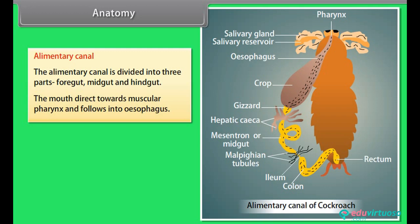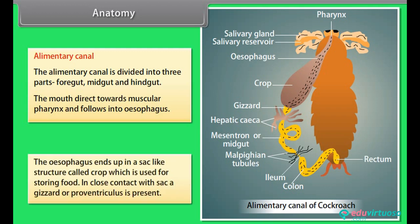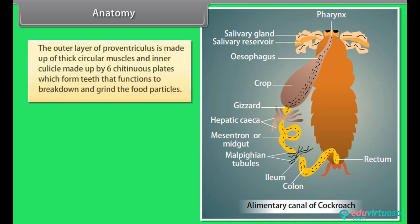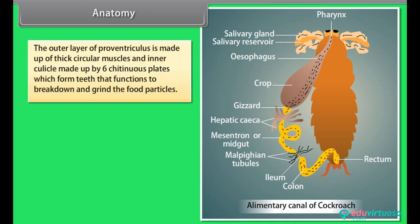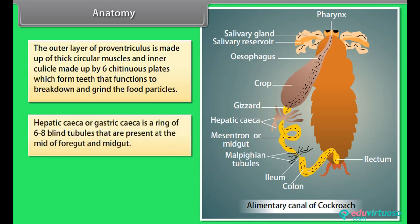The alimentary canal is divided into three parts: foregut, midgut and hindgut. The mouth directs towards the muscular pharynx and follows into the oesophagus. The oesophagus ends in a sac-like structure called the crop, which is used for storing food. In close contact with the crop, a gizzard or proventriculus is present. The outer layer of proventriculus is made up of thick circular muscles and an inner cuticle made up of six chitinous plates forming teeth that function to break down and grind food particles.